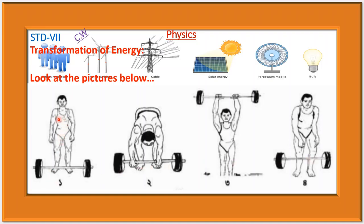So from the food, chemical energy is stored in the body of the weightlifter. The chemical energy is converted into kinetic energy, kinetic energy is converted into potential energy, and again potential energy is converted into kinetic energy, thermal energy, and sound energy. Energy can be transferred from one form to another form.